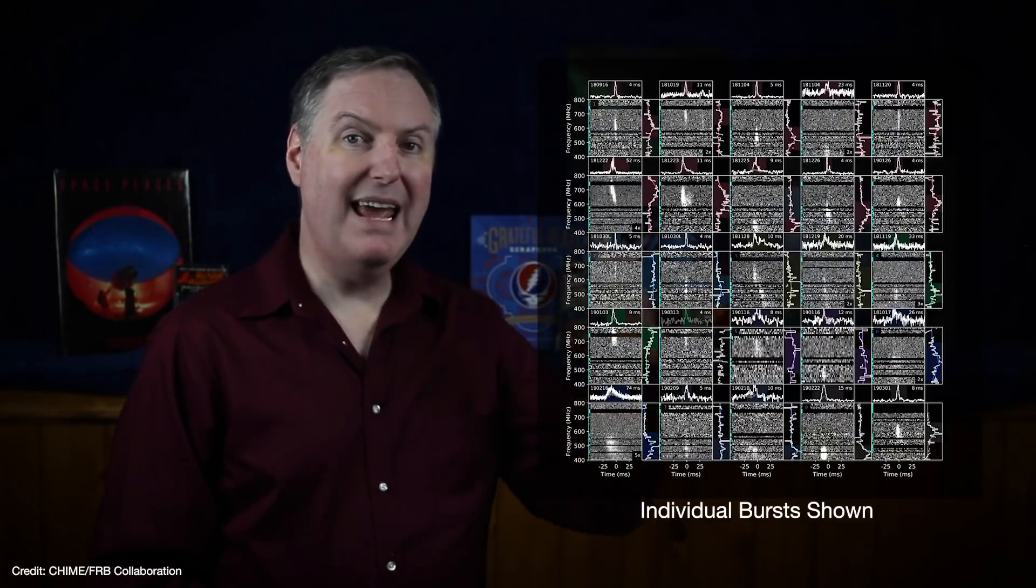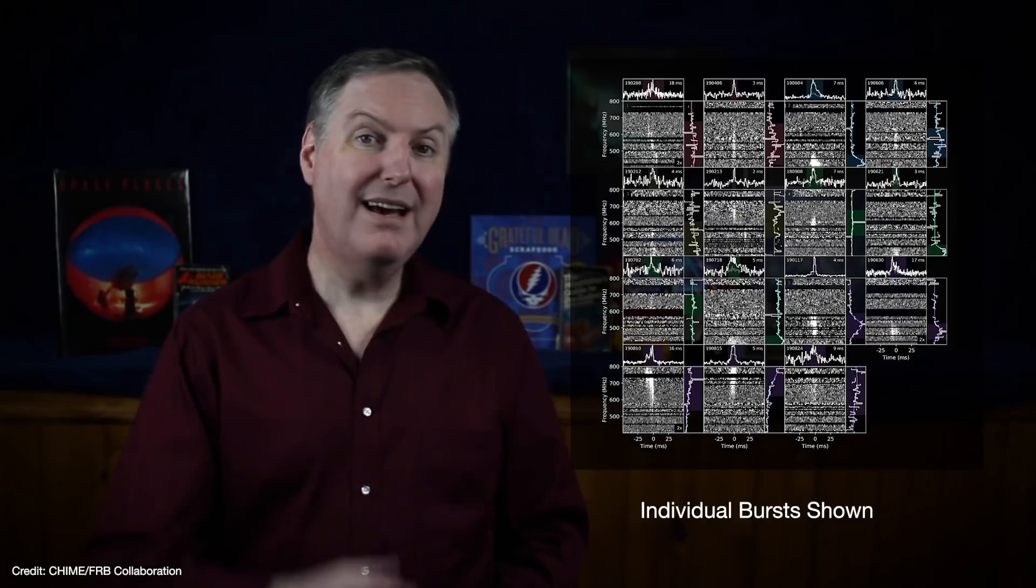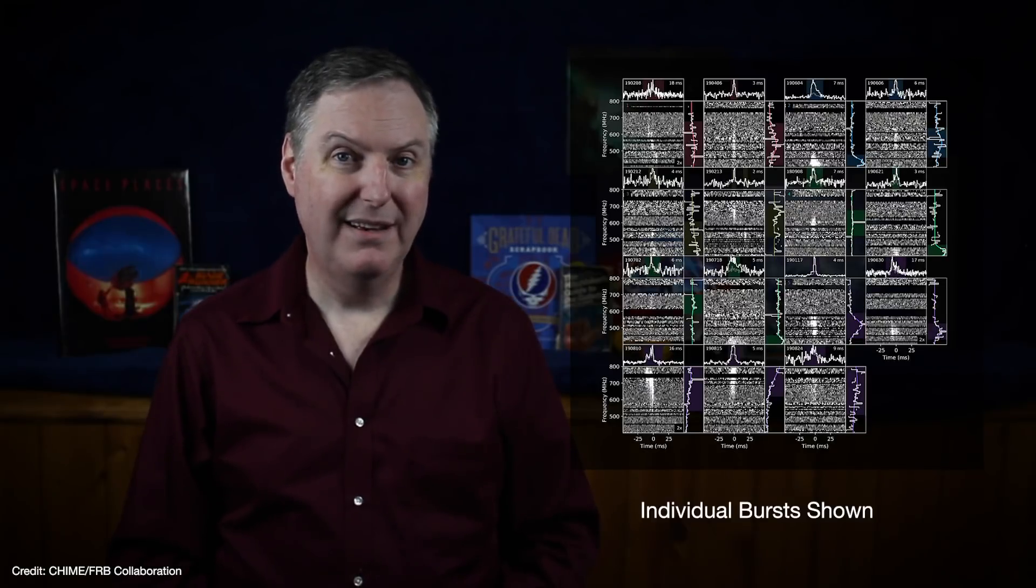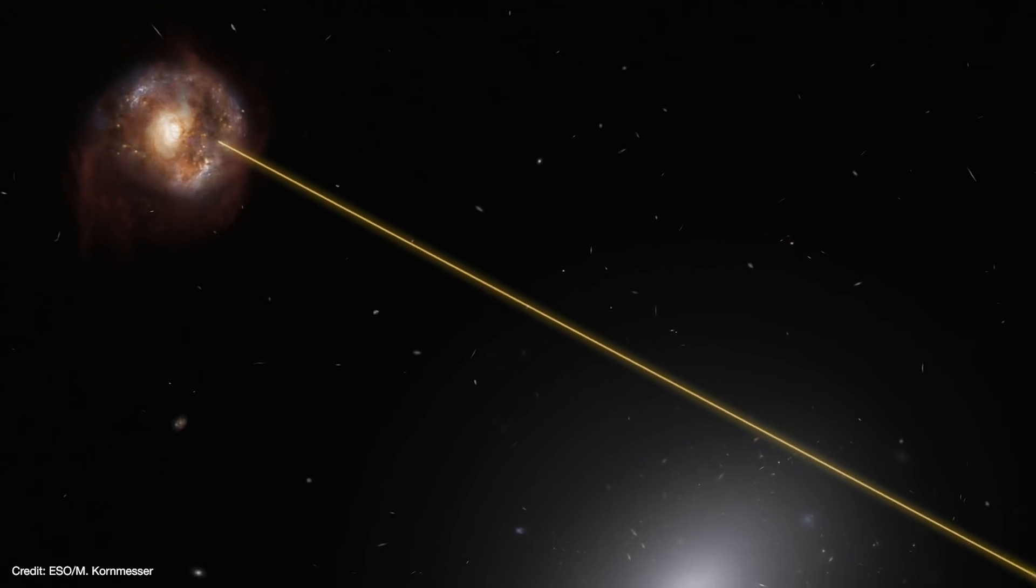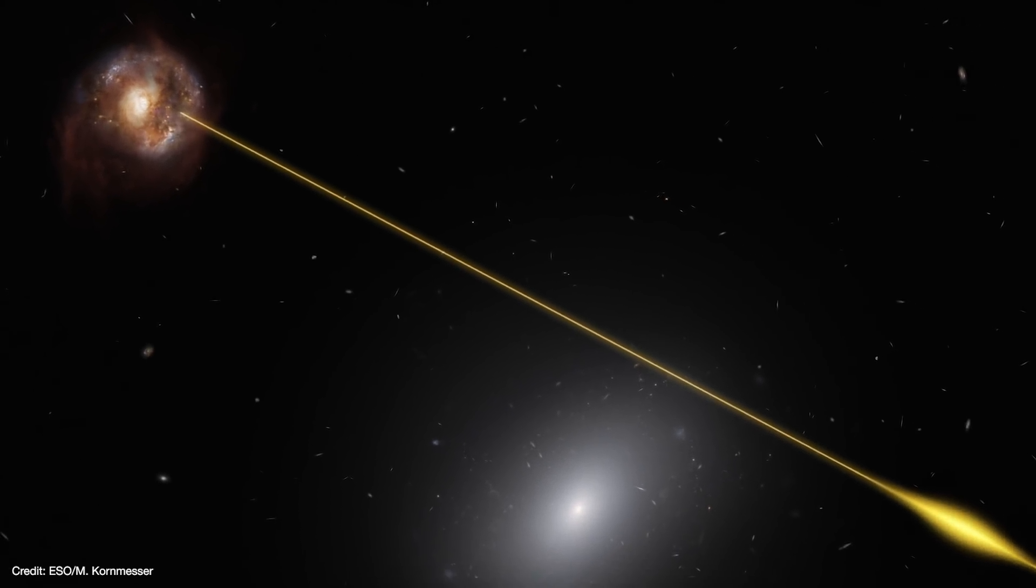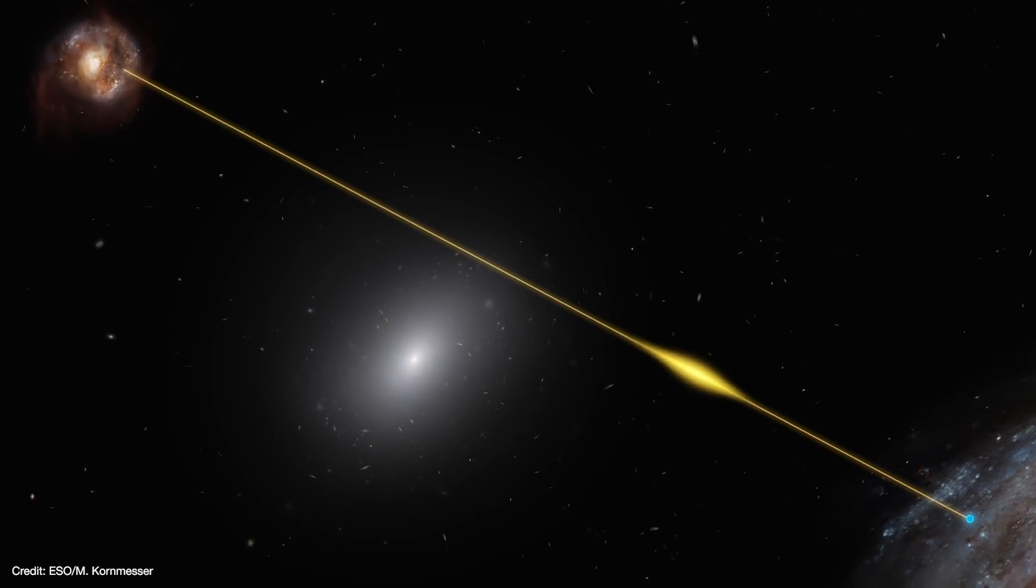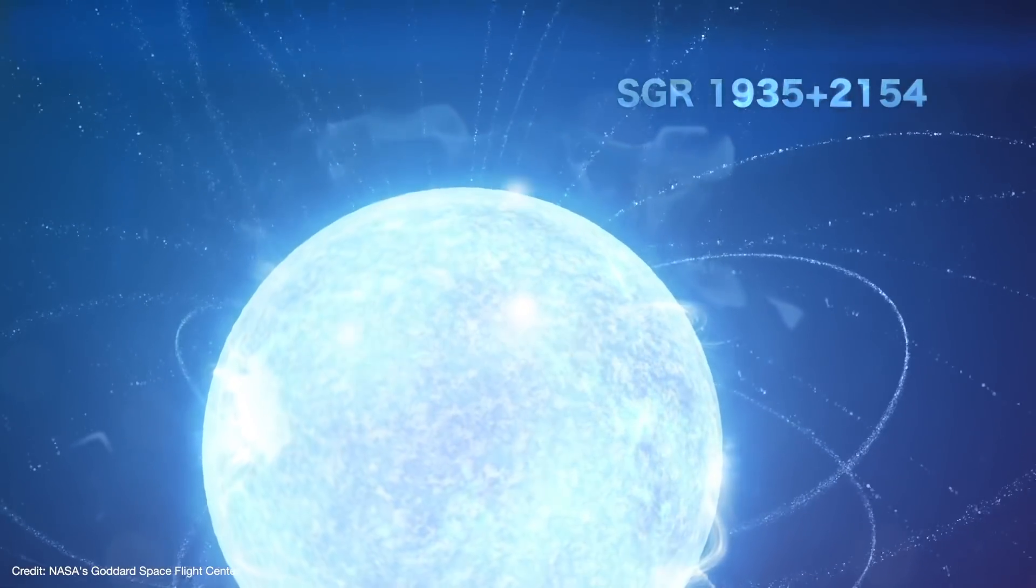In 2019, CHIME detected 8 new repeating FRBs, then 9 more repeaters were announced in March 2020. Now keep in mind, those are just the repeating sources. CHIME has detected hundreds of FRBs to date and it's still got that new radio telescope smell. But all of the FRBs had one thing in common. They were all detected from beyond our galaxy, which means they must be extremely energetic phenomena.